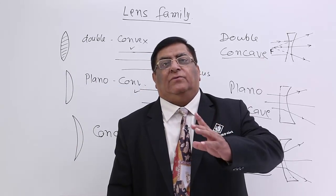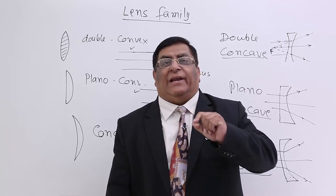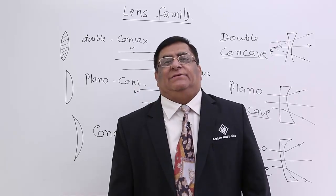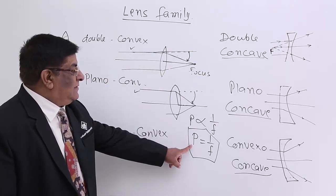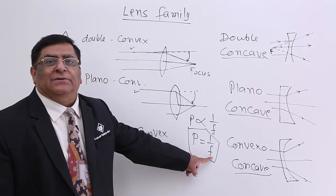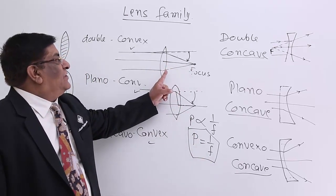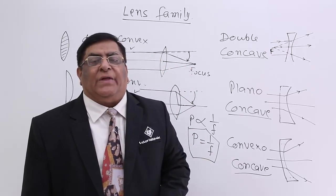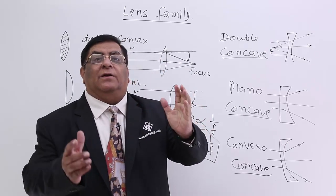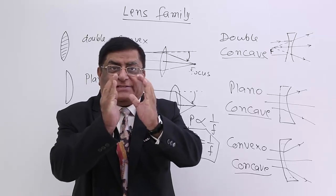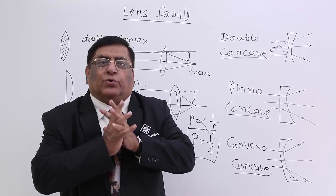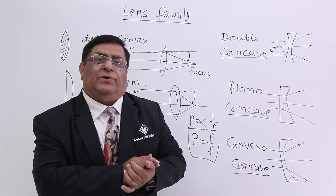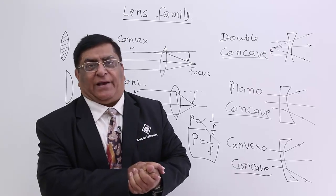In our next lecture, we will study the relation between refractive index and radius of curvature with the power of the lens — and since power is related to focal length, we can derive how radius of curvature and refractive index relate to focal length. This relation is used by people who make lenses using dies of different radii of curvature. That formula is known as the lens maker's formula. In our next topic, we will study the lens maker's formula. Thank you.